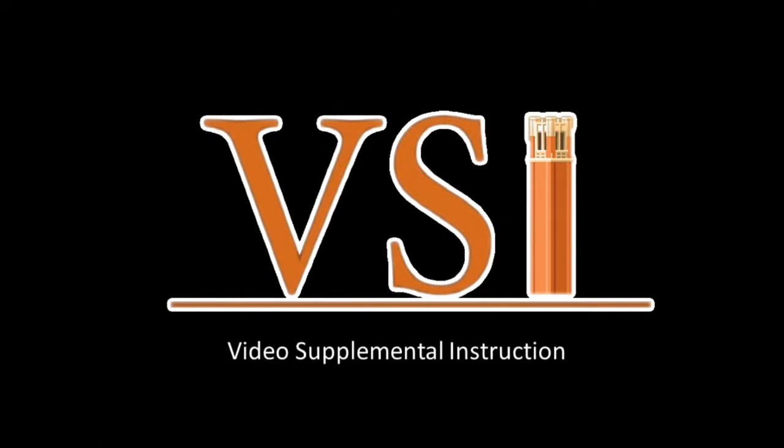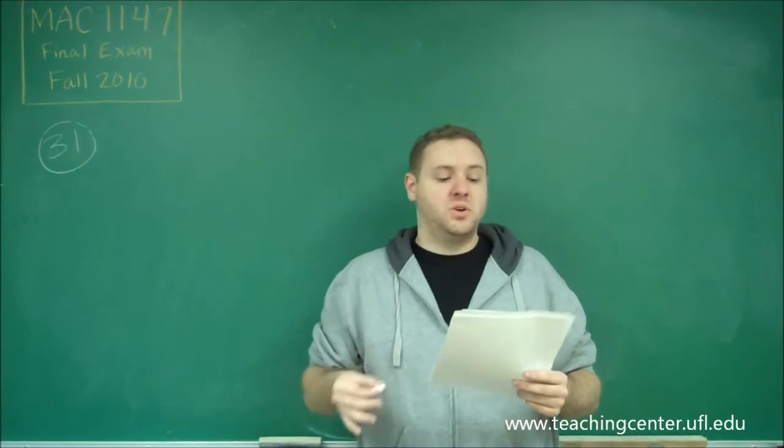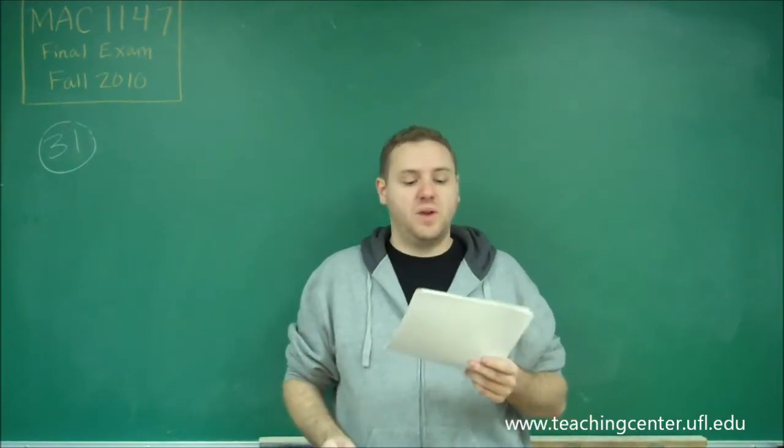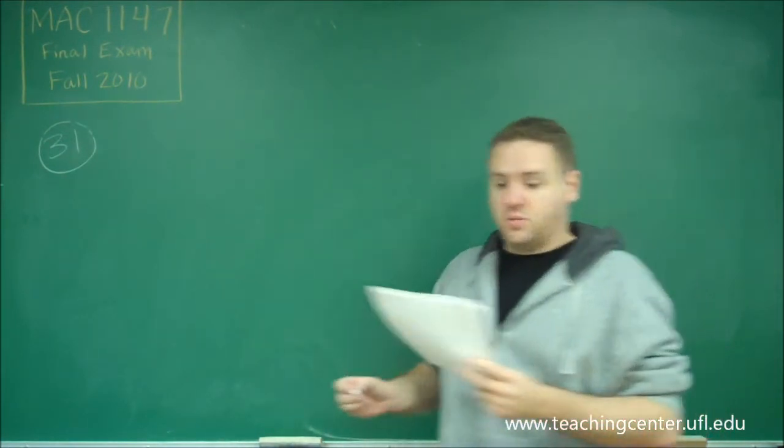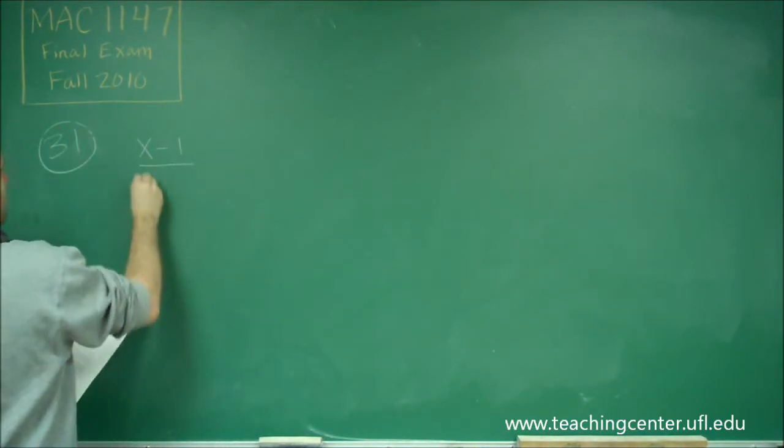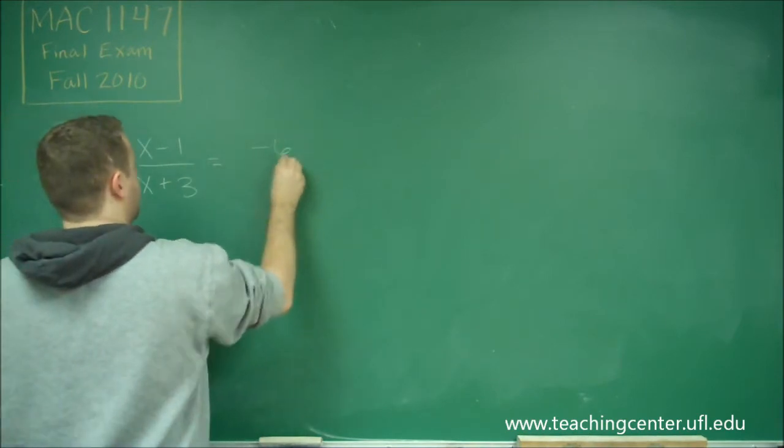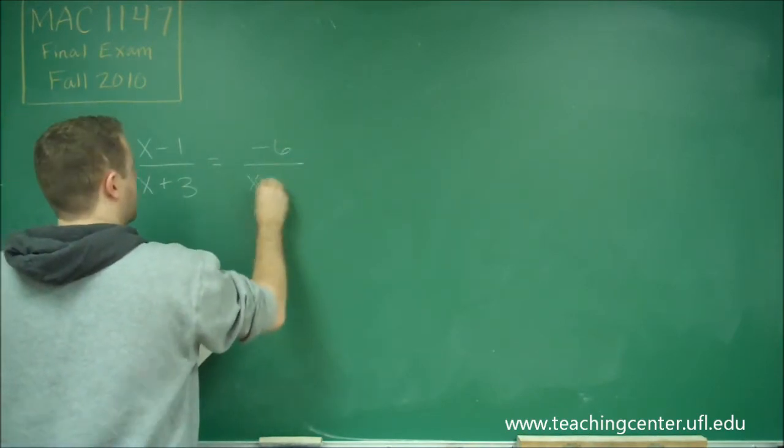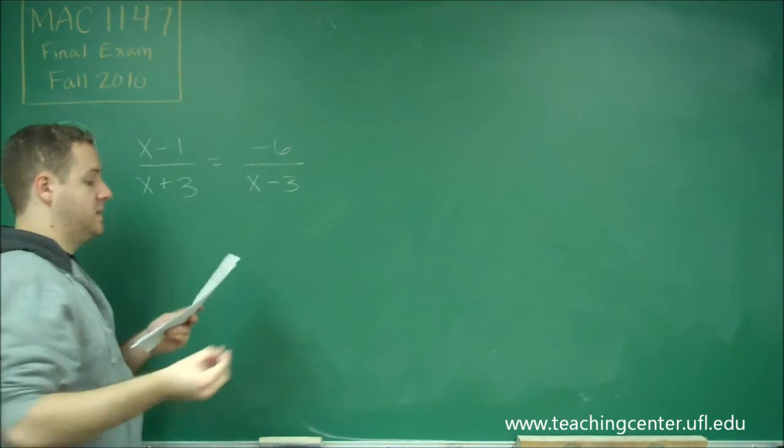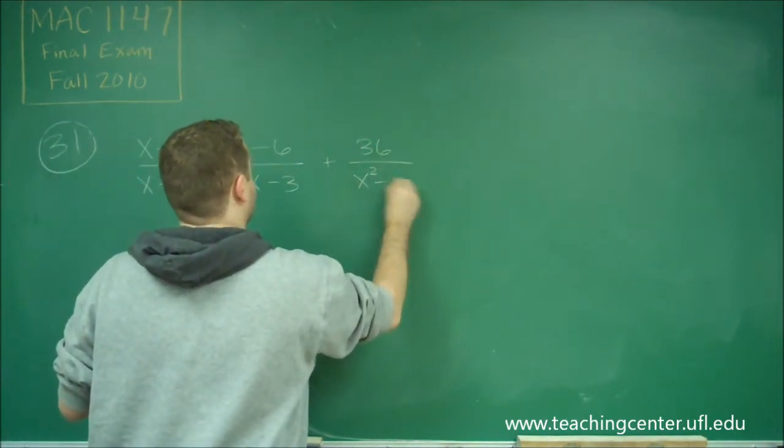Okay, in question 31 we need to solve an equation that involves three different rational pieces. So we have x minus 1 over x plus 3, and that's equal to negative 6 divided by x minus 3 plus 36 over x squared minus 9.